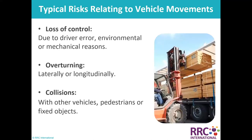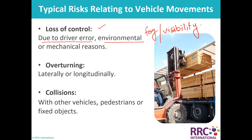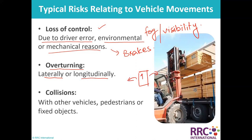First things first — what are the typical risks relating to vehicle movement? We can have loss of control, maybe because of driver error, environmental conditions, visibility issues, or mechanical reasons like brakes that could not be applied. Next is overturning — laterally or longitudinally — where a vehicle can turn over on its side or front.